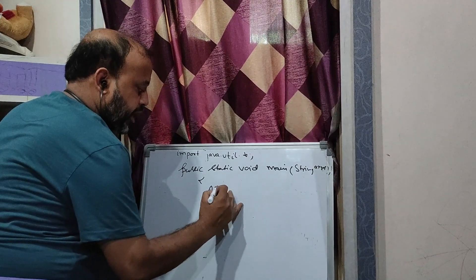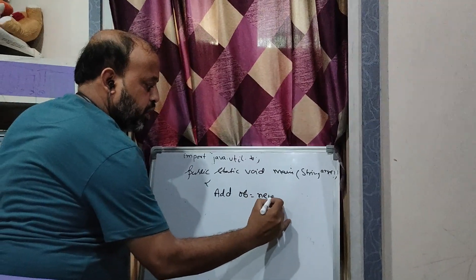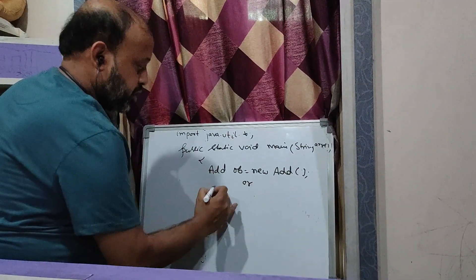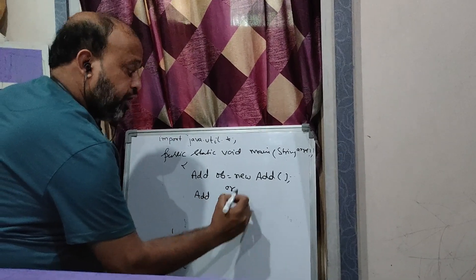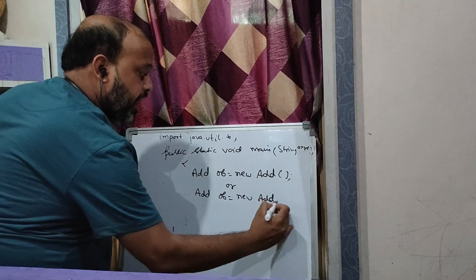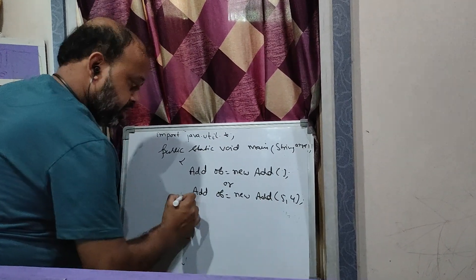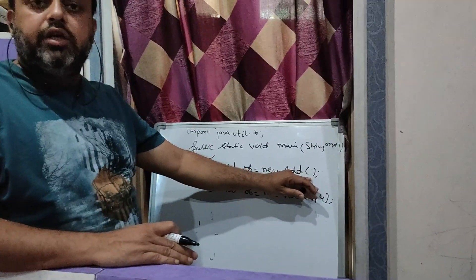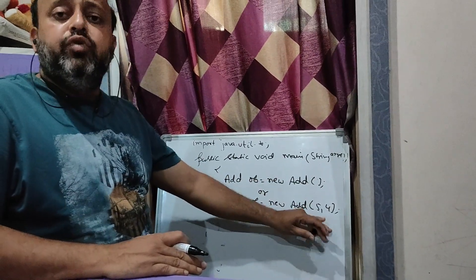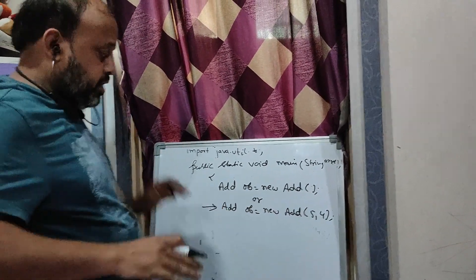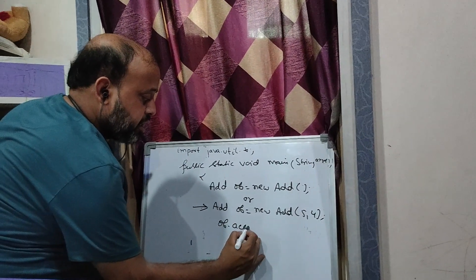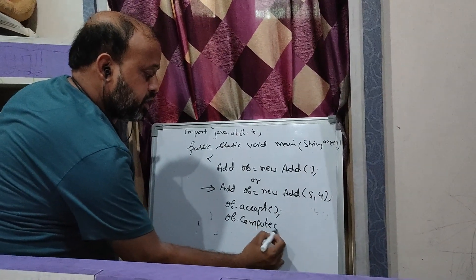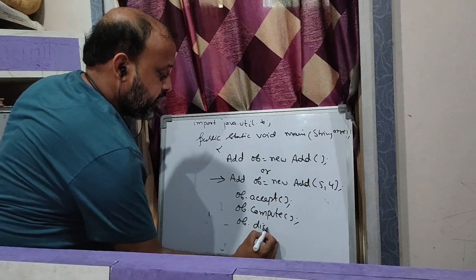To create an object: the name of the class is Add, so you write: Add ob = new Add(). This is the way of creating an object using the default constructor. Suppose you don't have a default constructor and only have a parameterized constructor, then you have to pass the parameters. This form is used when your constructor does not take parameters; the other form is used when your constructor takes parameters. After that you have to call the methods: accept(), compute(), and then display().